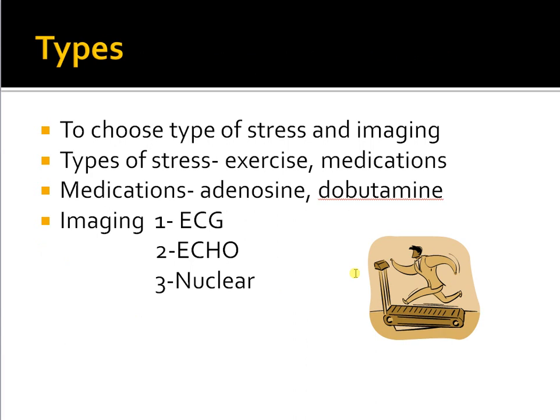Next, what options are available? The most important thing to remember is that if your patient can exercise, that is the best type of stress test. When choosing a stress test, look at two points: how do you want to stress the patient, and what imaging do you want to use to interpret the results. For stressing the patient, there are two options — exercise or medications. ECG is used across all types, and the two major imaging categories are echocardiogram and nuclear imaging.